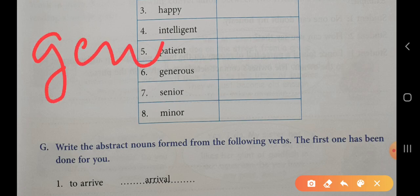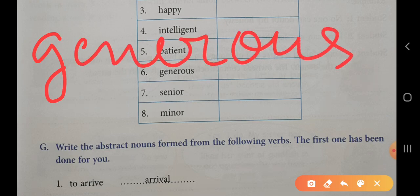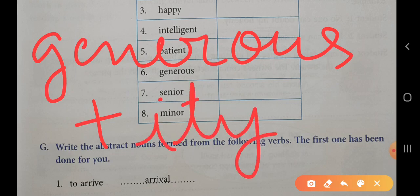will add I-T-Y. This will be the spelling of generosity. Children, this is the method of making nouns from the given adjectives. Easy methods I am showing to you—you can easily learn them. Next one is